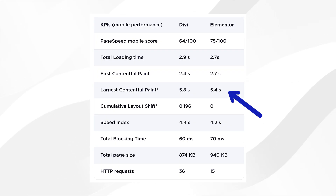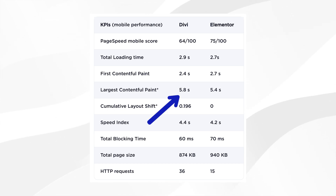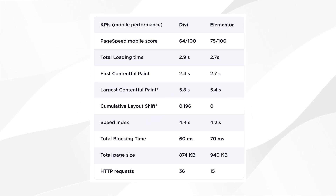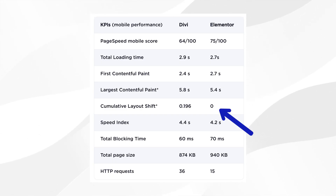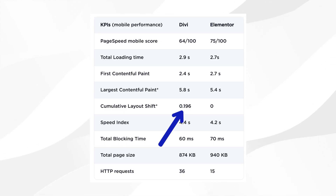Did you know a mere 0.2 second difference in loading time can impact your bounce rates? Now for the Core Web Vitals, which may be crucial for your SEO performance. For the Largest Contentful Paint (LCP), Elementor got 5.4 seconds and Divi got 5.8 seconds. For Cumulative Layout Shift (CLS), Elementor got a perfect score of 0, while Divi got 0.196.